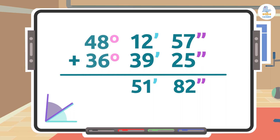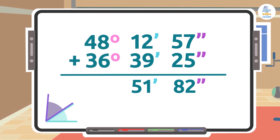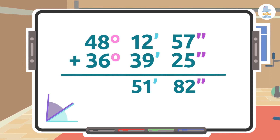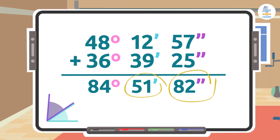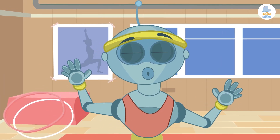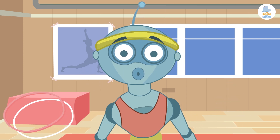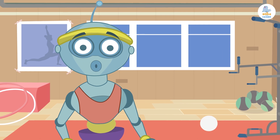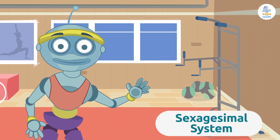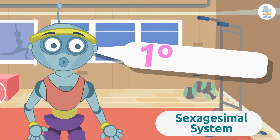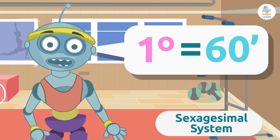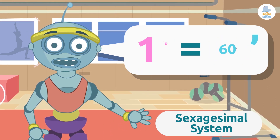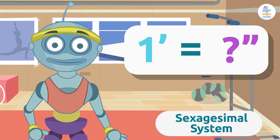Lastly, we'll add the degrees: 48 degrees plus 36 degrees is 84 degrees. Remember that the answers for the seconds and minutes columns must have a value between 0 and 59. You may be wondering why — it's very easy. Remember, we are measuring angles using the sexagesimal system. How many minutes are in a degree? That's right, there are 60 minutes in a degree.